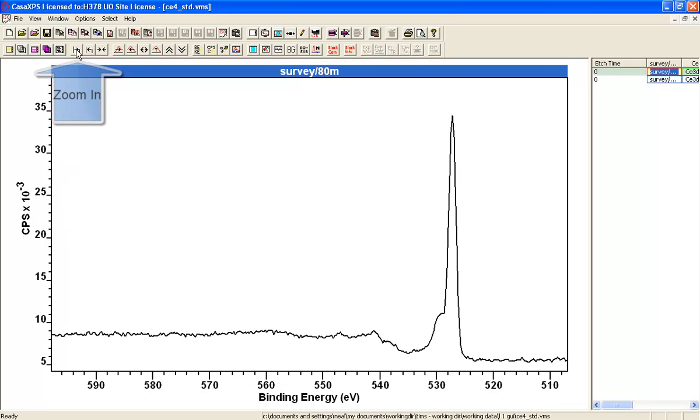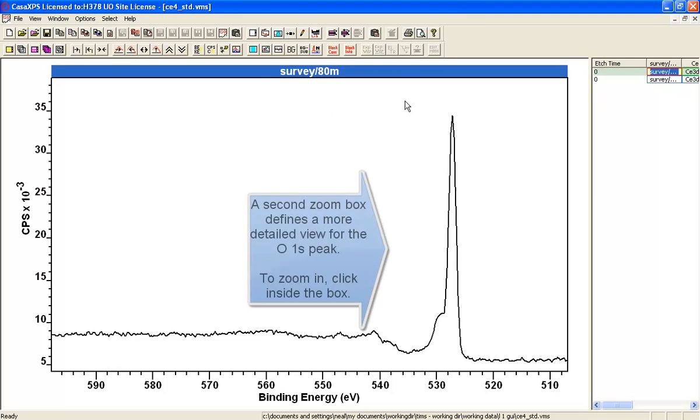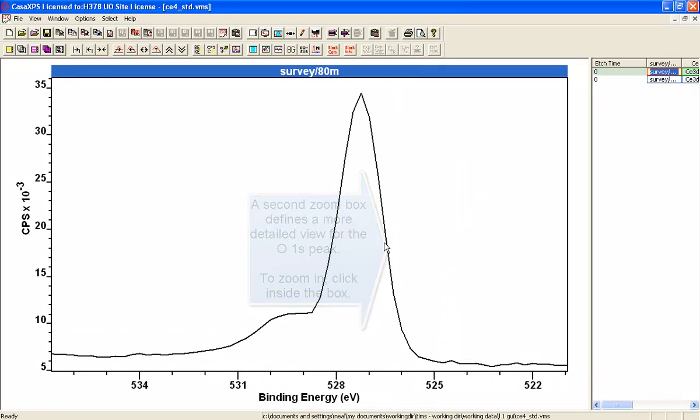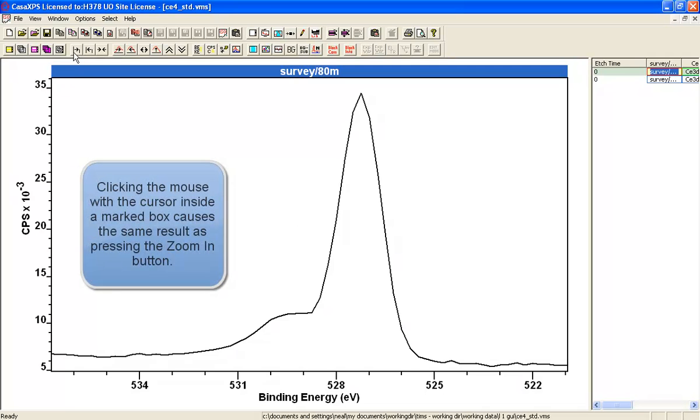it'll zoom the data so we can see this oxygen peak in more detail, and I can zoom again by zooming in and clicking inside the box. That click inside the box had the same effect as pressing the zoom in button.